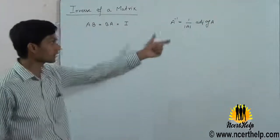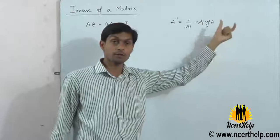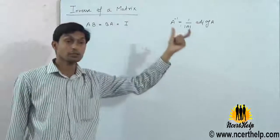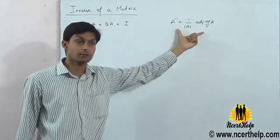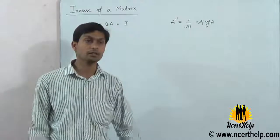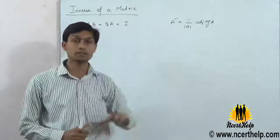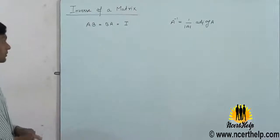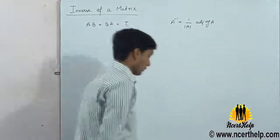The formula for inverse using determinants is: A inverse equals one upon the determinant of A, times the adjoint of A. But if the question specifically says to use elementary transformation, it is easier to apply that method. Find the inverse of the matrix using elementary transformation.